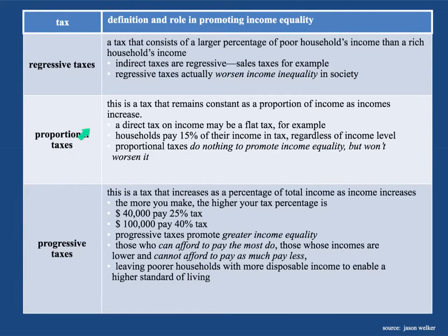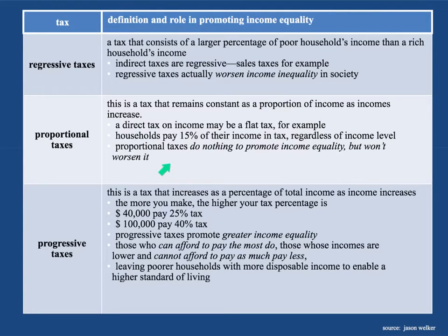Proportional taxes — take a look at these. This is a tax that remains constant as a proportion of income as incomes rise. This is a direct tax on income, maybe a flat tax. A lot of countries, and in the United States it became really popular. With a flat tax, if you make $10,000, $50,000, $100,000, or a million dollars a year, you pay 15% of that in tax. That sounds nice — you pay 15% of your income regardless of income level. But proportional taxes do nothing to actually promote income equality. They won't exactly worsen it, but if everybody's paying the same tax regardless of their ability to pay, it's not really making the distribution of income more equal.